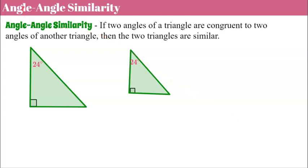Now we're going to talk about angle-angle similarity. If two angles of a triangle are congruent to two angles of another triangle, then we know that the two triangles are similar. So if both triangles share a 24-degree angle and both have a 90-degree angle, we know the triangles are similar because the third pair would also be congruent. You only need to know two pairs of corresponding angles — as soon as those two pairs are congruent, we can conclude the triangles are similar.